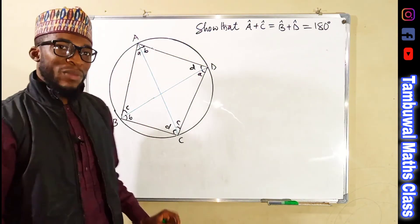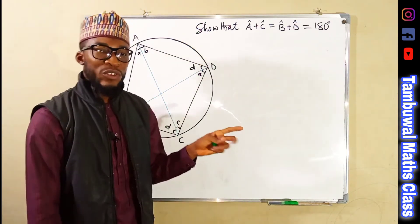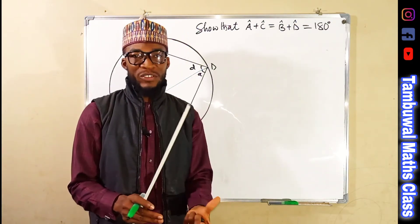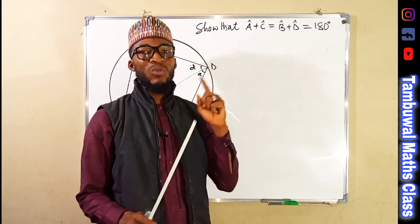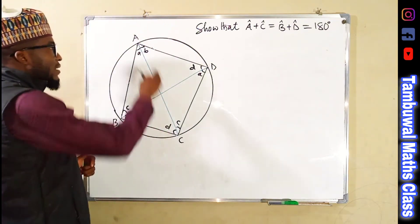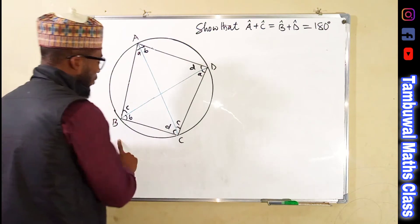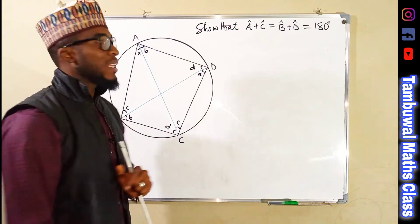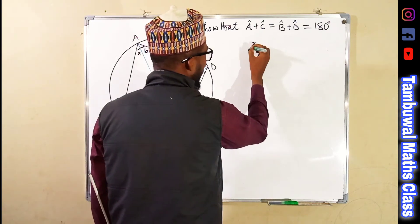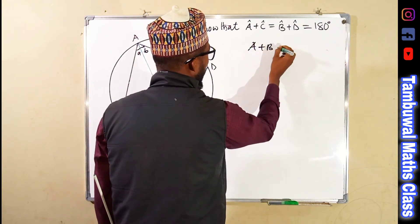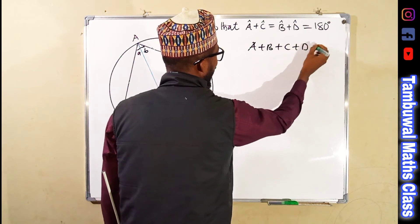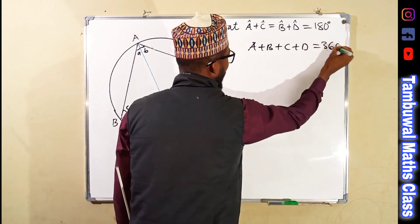Having done this, we should know that the sum of the interior angles of a quadrilateral is equal to 360 degrees. So if we add angles A, B, C, and D, we are going to obtain 360 degrees. Therefore, A plus B plus C plus D equals 360 degrees.